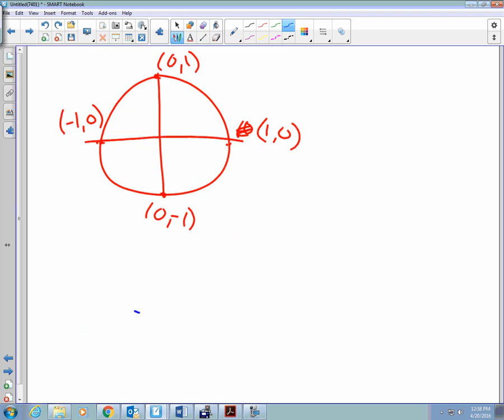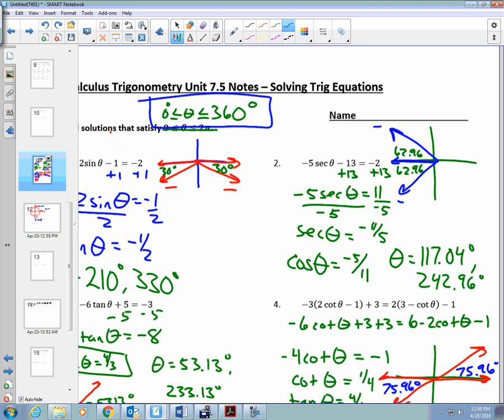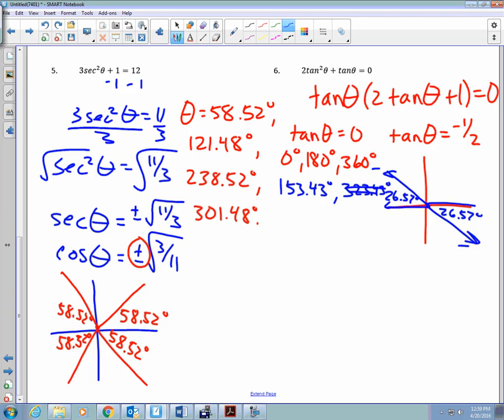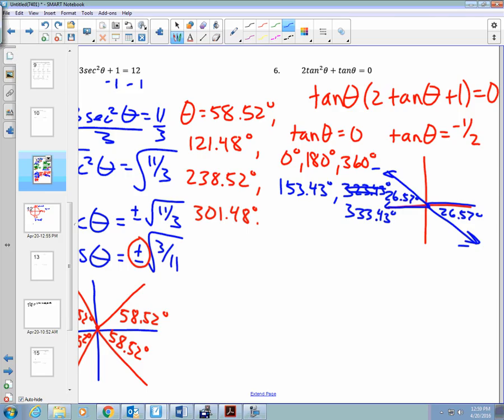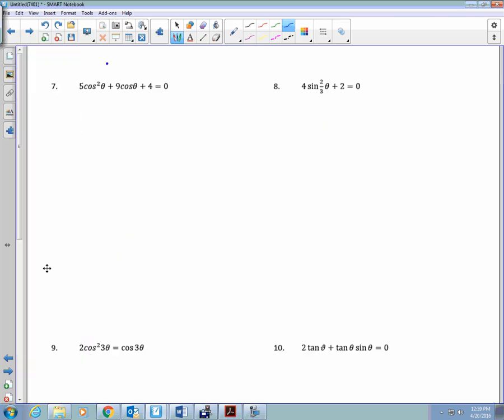All right. So, zero divided by one is zero. One divided by zero is undefined. Zero divided by negative one, zero. Negative one divided by zero, undefined. So, we want to know where tangent is zero: Zero, 180, 360. Tricky, tricky. Okay. We'll go back and fix my arithmetic. It's not 323. It's 333. All right. Flip it over. Let's do two more problems and call it a day.